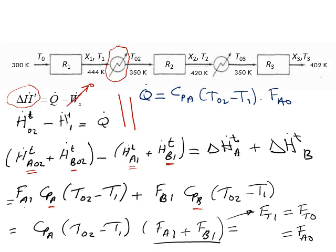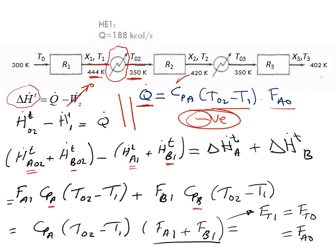We have CPA, we have the temperatures, and FnA0 is given, so we can calculate Q̇. Reflecting on the sign: T02 = 350 K and T1 is much larger, so the term is negative. From the point of view of the reaction mixture, it's losing heat to the coolant — so the sign is correctly negative. We put the magnitude as the duty value.